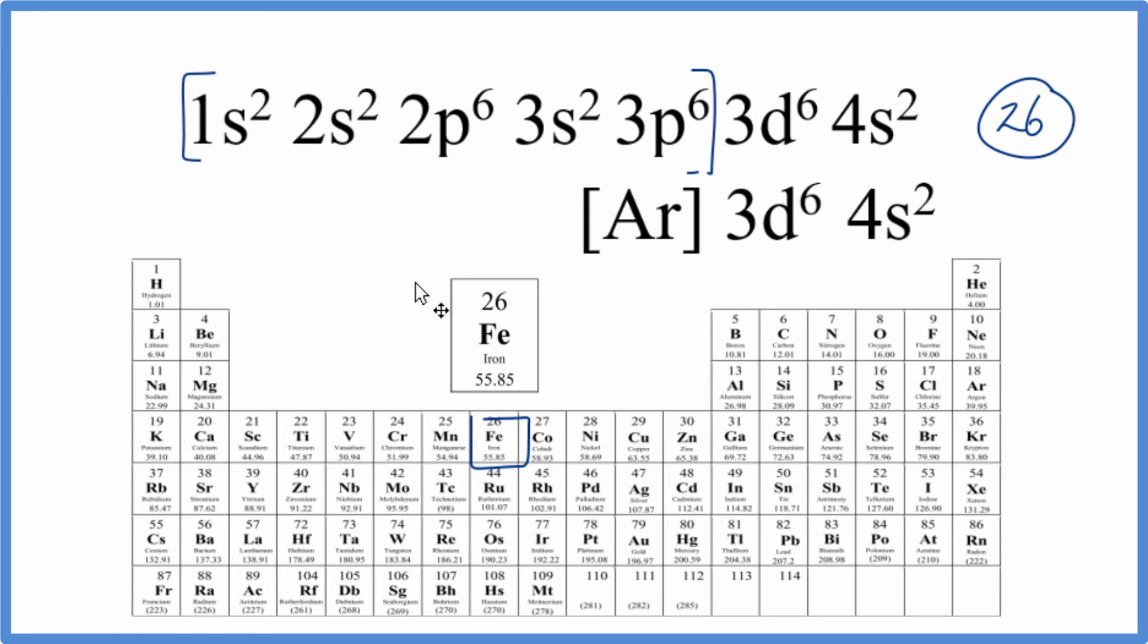So those are two ways that you can figure out which element is represented by the electron configuration 1s², 2s², 2p⁶, 3s², 3p⁶, 3d⁶, 4s². This is Dr. B, and thanks for watching.